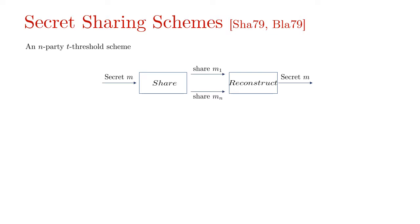Moving on to secret sharing schemes which were introduced by Shamir and Blakley independently in 1979. An N party T threshold scheme comprises of a share algorithm that takes in a secret M and outputs the shares M1 through Mn. And some of the shares are fed into a reconstruct algorithm to output the secret. A secret sharing scheme should satisfy two basic properties which are correctness which guarantees that given any T plus 1 or more shares of the message M, the secret M is reconstructed correctly.